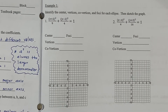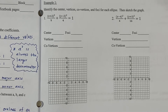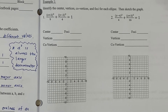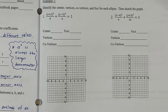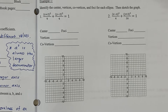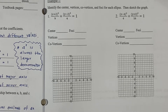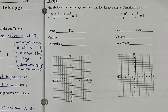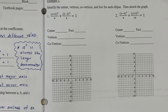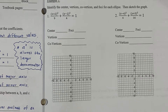Example one: identify the center, vertices, co-vertices, and foci for each ellipse. In problem number one, we have (x + 2)² / 9 + (y - 2)² / 4 = 1.